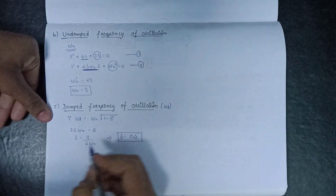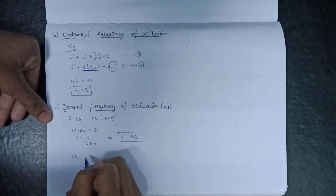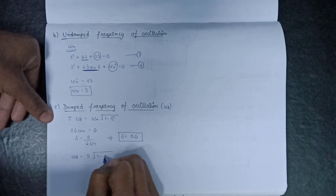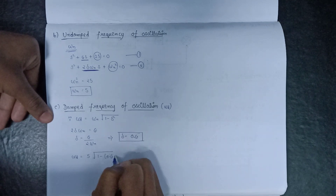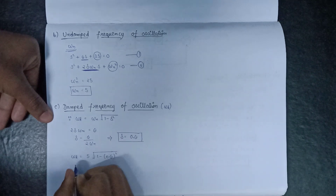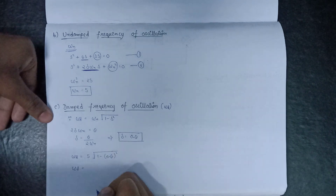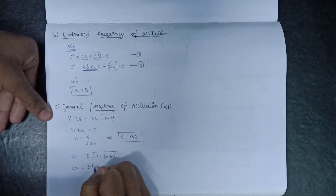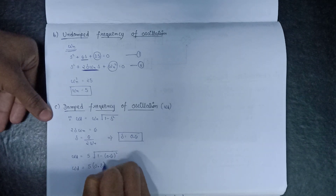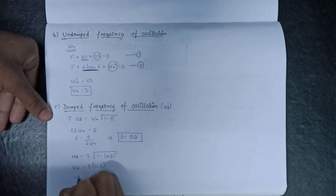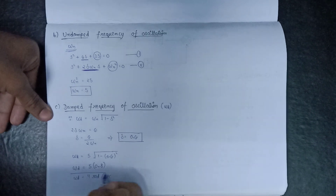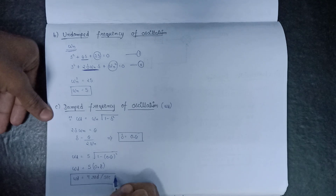Substituting into the formula: ωd = 5 × √(1 − 0.6²) = 5 × 0.8 = 4 rad/s. This is the damped frequency of oscillation.